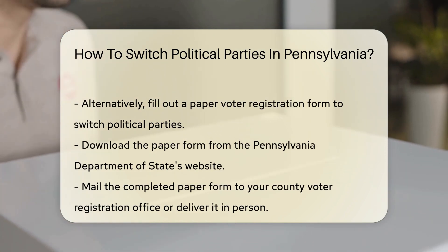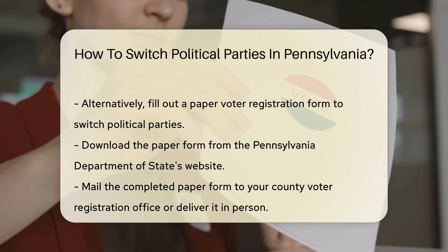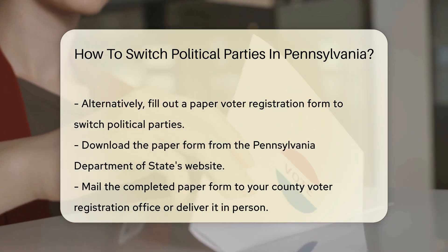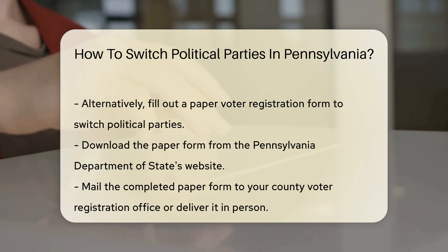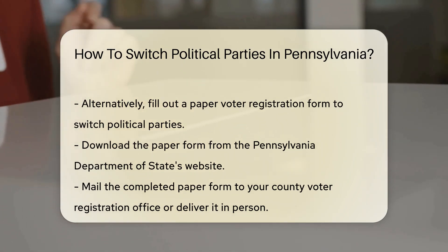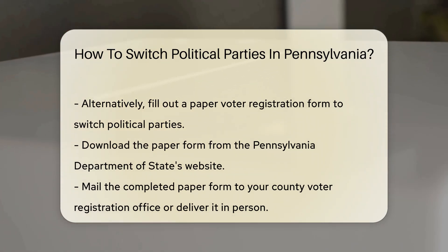You can also deliver it in person to your county voter registration office. The deadline to switch political parties is 15 days before an election. Make sure to submit your application before this deadline.